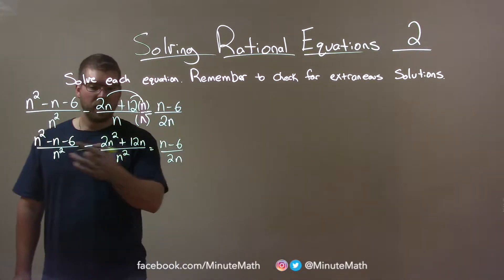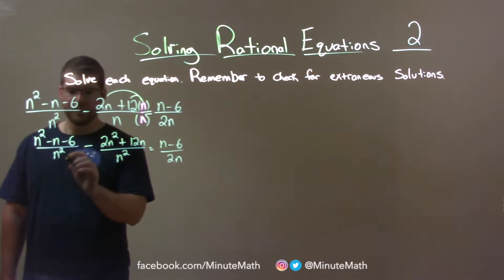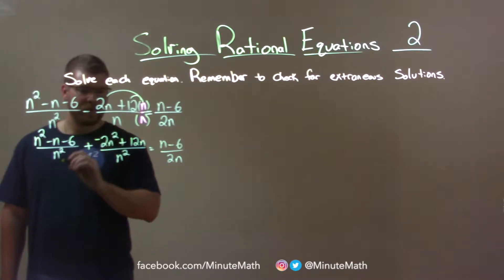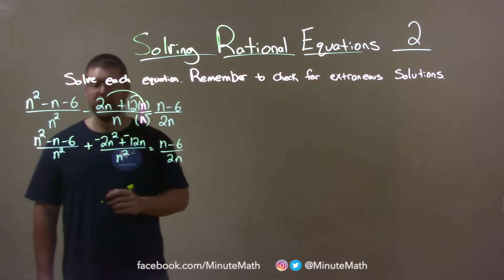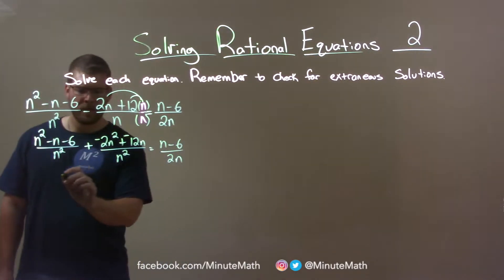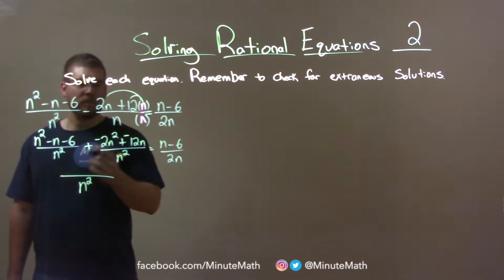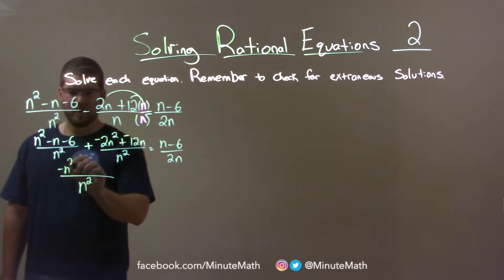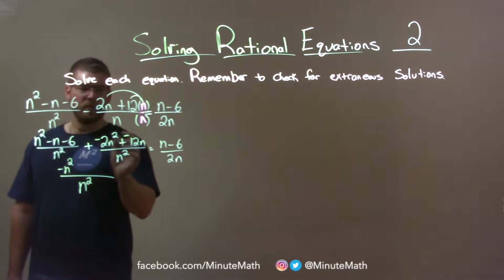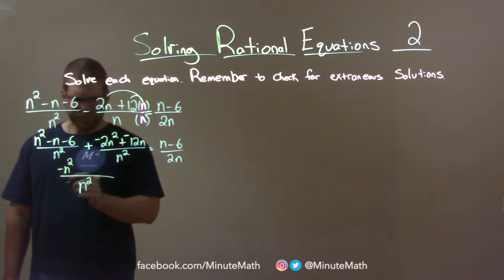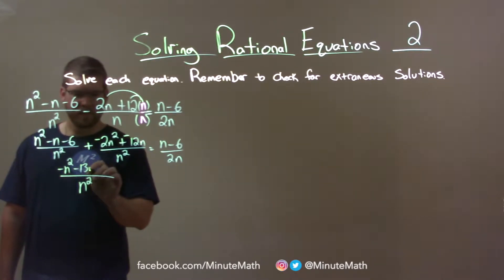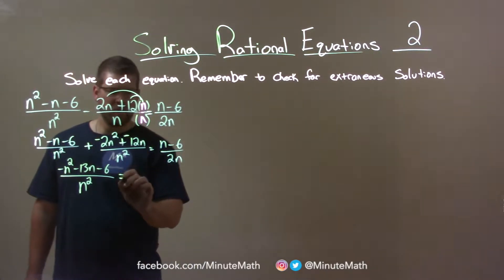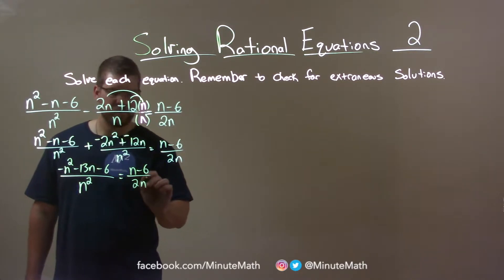Now let's combine the left-hand side together with the same base. We're distributing that minus sign, and this is also a negative there. So now we have n squared down here, and let's combine what we can. n squared minus 2n squared is minus n squared. Minus n plus negative 12n is minus 13n, and the minus 6 is by itself — there's no like term. And over here we have n minus 6 over 2n.